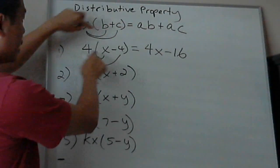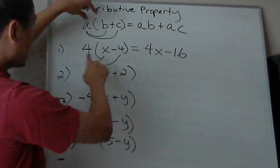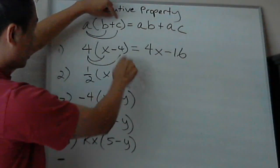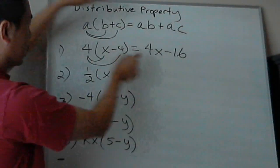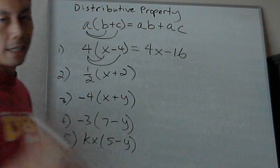You see, this is a times b plus a times c. C is negative 4, so you get negative 16. This is more algebraic and you have to start seeing it in terms of variables.